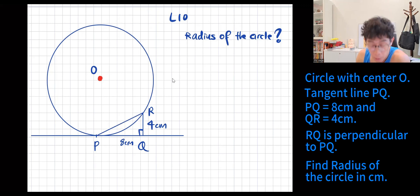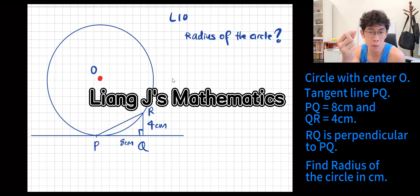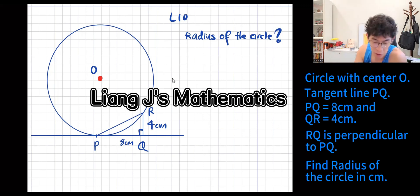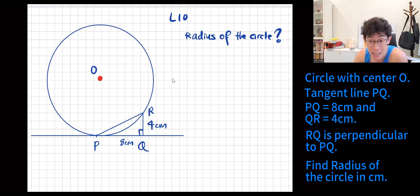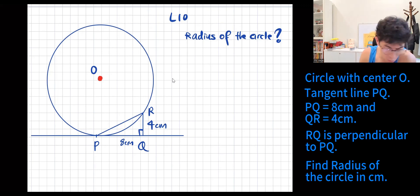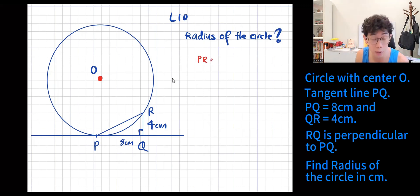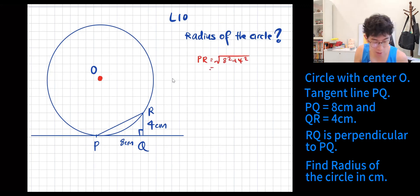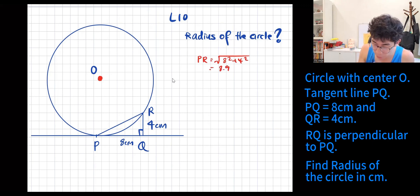The first thing I do is get the PQ length. Because obviously you see 4 cm there, you see 8 cm, you see 90 degree — your hand will be itchy, you're going to draw that PQ. Students get 8.944. First working: 8 squared plus 4 squared — because of Pythagoras' theorem — comes out 8.944. The more decimal points you place, the better.